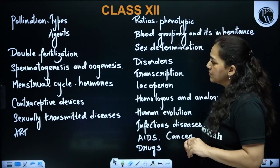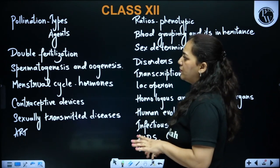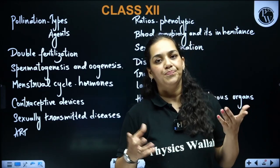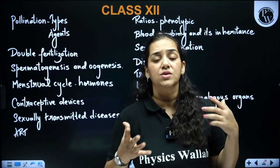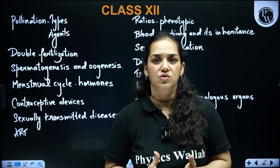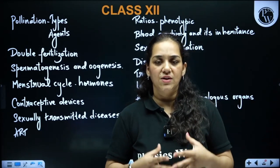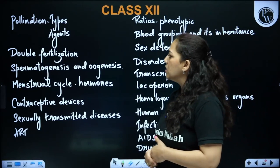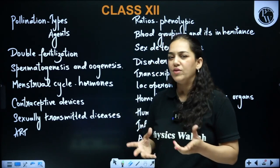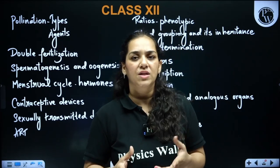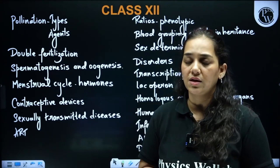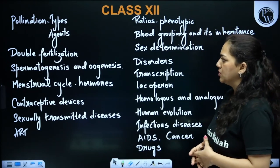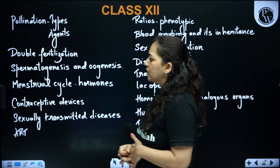Then comes the process of double fertilization, which involves triple fusion. It is unique to angiosperms, and the entire event can be asked. You can also expect a question around the female gametophyte — the embryo sac, its seven-cell eight-nucleated condition — quite frequently asked in many examinations.